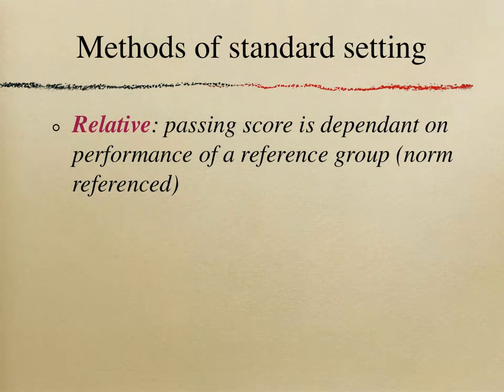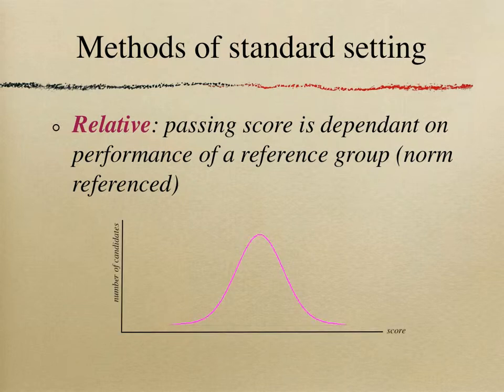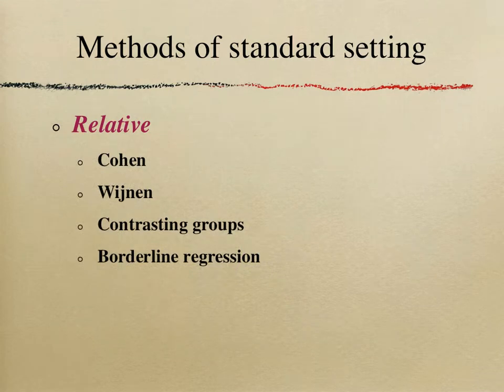So far in the series we have had a look at the principle generally behind standard setting, and we also looked at some of the most famous absolute methods. In this video we are going to look at the relative methods. Unlike the absolute methods, which were based on individual performance, in relative methods we look at the group of examinees as a whole, dealing with normalized curves in general. Some of the most famous ones are listed here and I'll be going through each one by one.